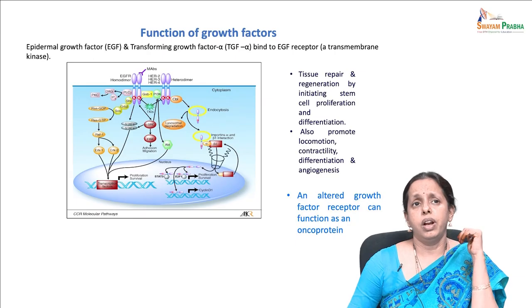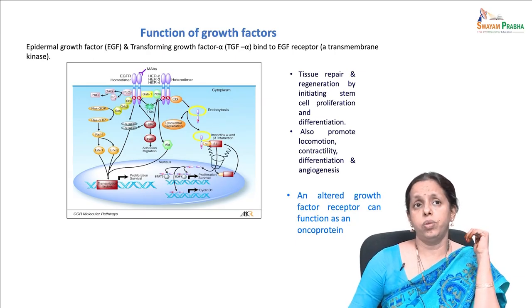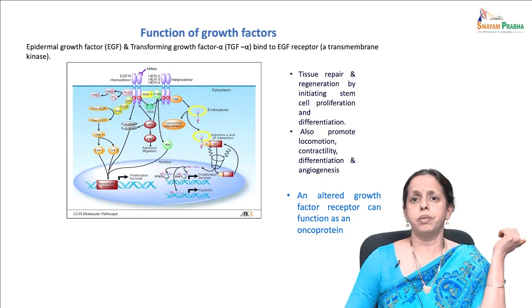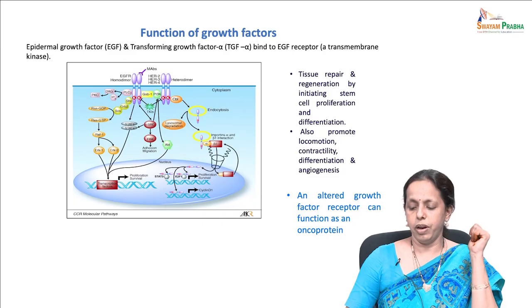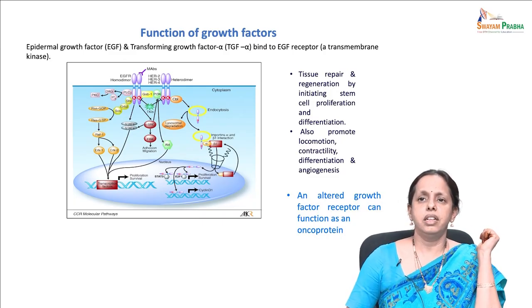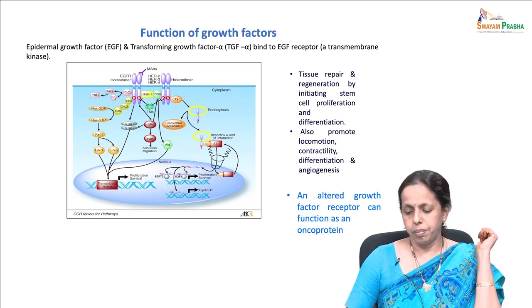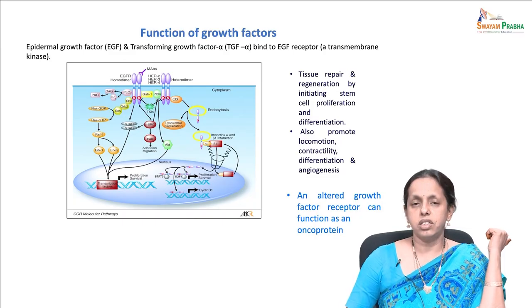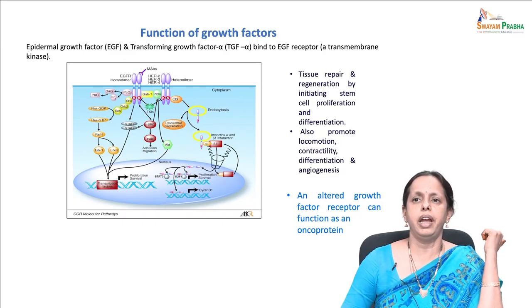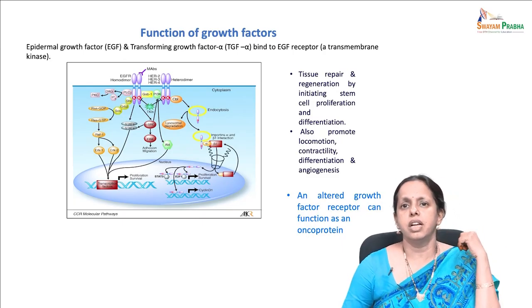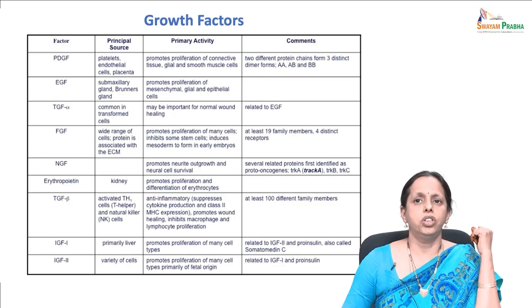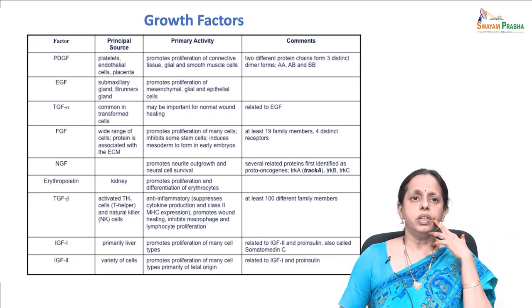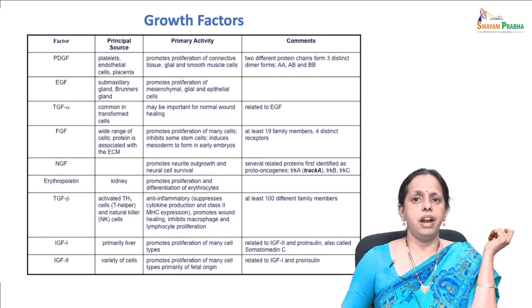The EGFR is a family — it belongs to the RTK family, which consists of four members: EGFR (ERB1), ERB2 which is HER2, ERB3 which is HER3, and ERB4. They are structurally related receptors — single chain transmembrane glycoproteins — which consist of an extracellular ligand-binding ectodomain. Receptor dimerization is very essential for the activation of the intracellular tyrosine kinase domain and phosphorylation of the C-terminal tail.